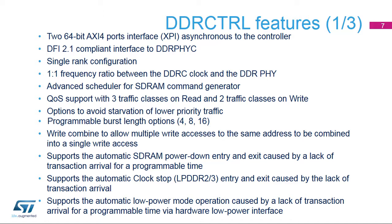Advanced QoS support with three traffic classes on read and two traffic classes on write. Options to avoid starvation of lower-priority traffic. Guaranteed coherency for write-after-read, or WAR, and read-after-write, or RAW, on the AXI ports. Programmable support for burst-length options: 4, 8, or 16. Write combining allows multiple write-accesses to the same address to be combined into a single write-access. Single rank configuration. Supports automatic SDRAM power-down, automatic clock stop for LPDDR2 or LPDDR3, and automatic low-power mode operation via hardware low-power interface.